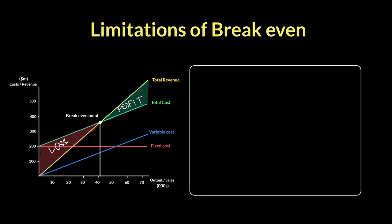We saw this graph earlier in another video and looked at it in quite a bit of depth. Just to review it quickly: fixed cost remains the same — a straight line regardless of your level of output. Variable cost is upward sloping because as you produce more output, you incur more variable cost. The combination of those two is your total cost, shown here by the green line. Then your revenue — you sell your product for higher than it costs to make it, so it'll always be a steeper graph. When the total revenue line intersects with the total cost curve, that's where the breakeven point occurs.